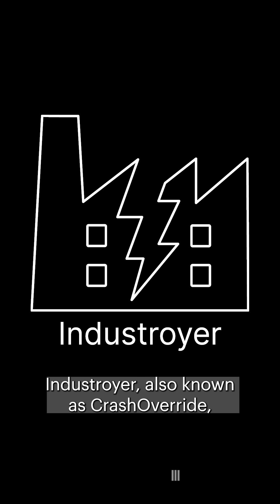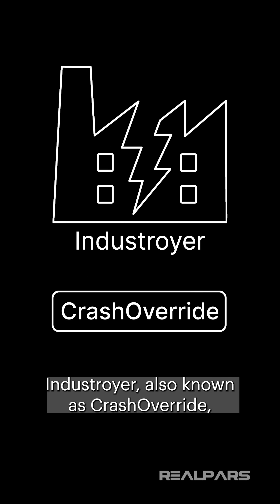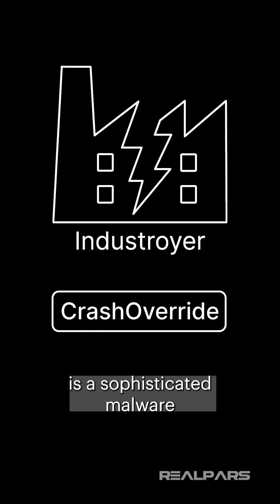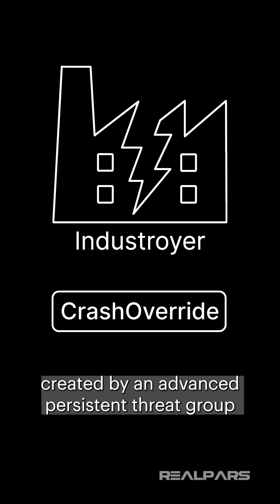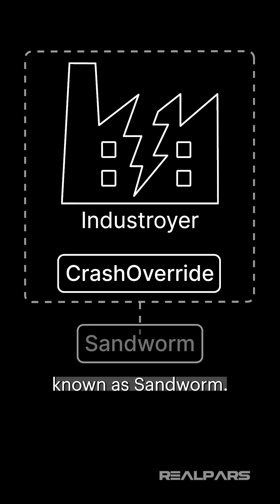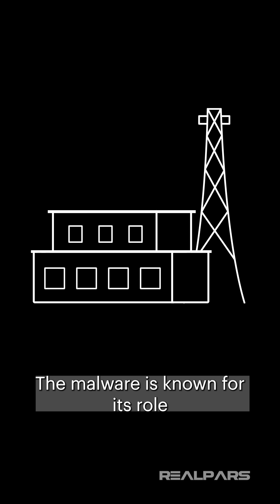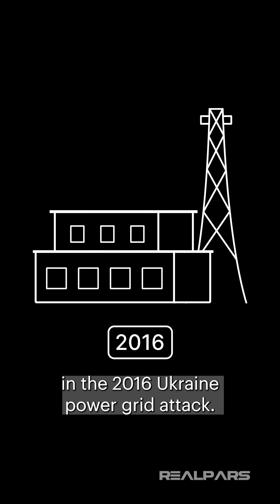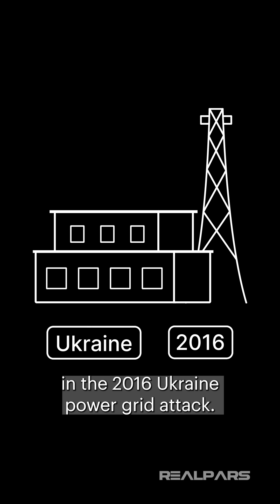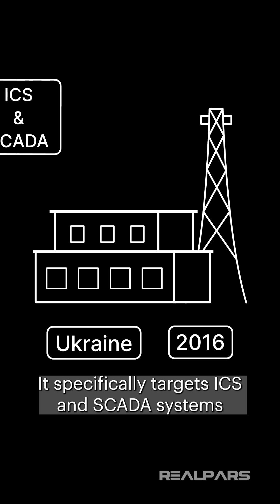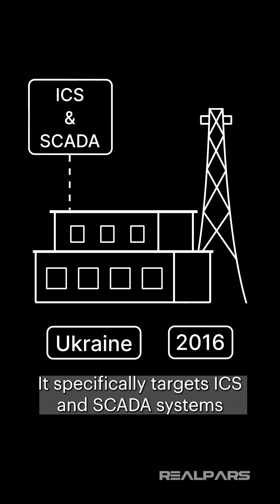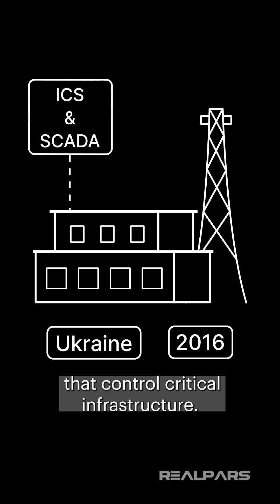Indestroyer, also known as Crash Override, is a sophisticated malware created by an advanced persistent threat group known as Sandworm. The malware is known for its role in the 2016 Ukraine Power Grid attack. It specifically targets ICS and SCADA systems that control critical infrastructure.